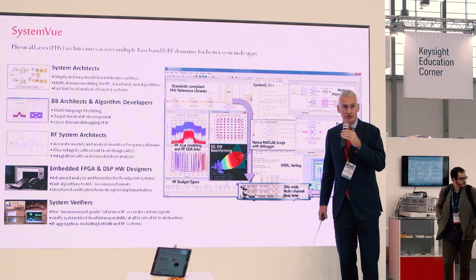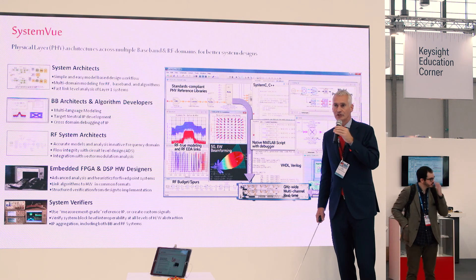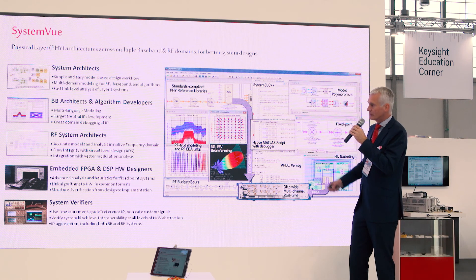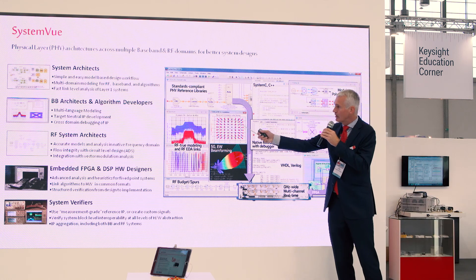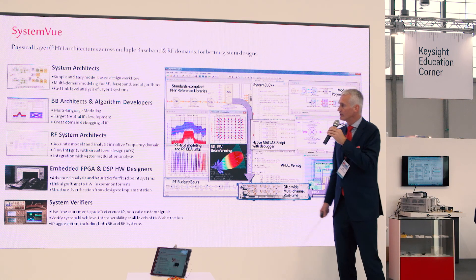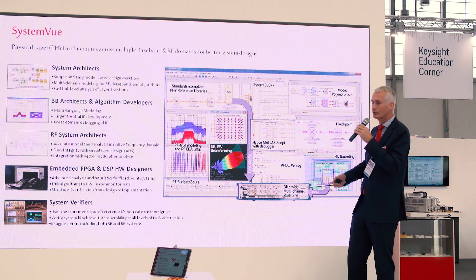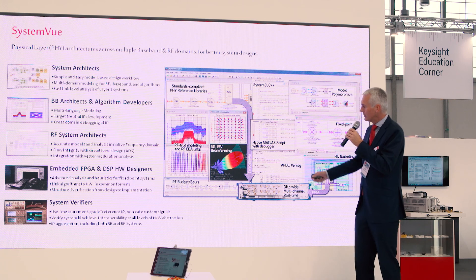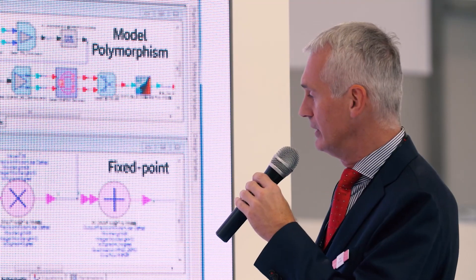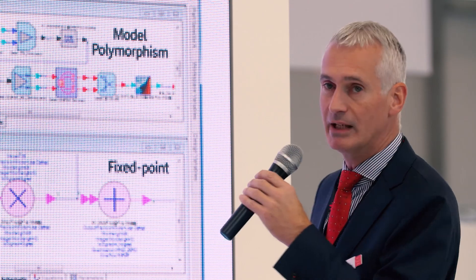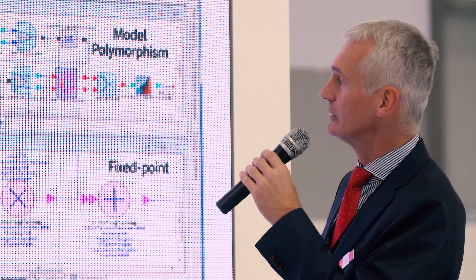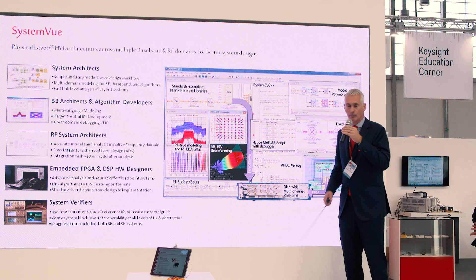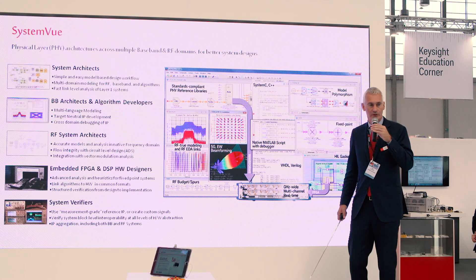The third tool at this show is SystemVue, an electronic system-level design tool. It is a powerful tool used by system architects, algorithm designers, and RF architects, and allows you to make trade-offs between RF and baseband. You can plug in data from other tools — VHDL, it has a native MATLAB interpreter, you can use SystemC models — and then run a complete simulation of your lineup.